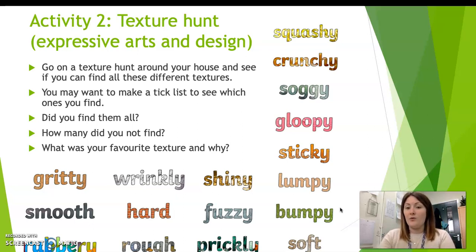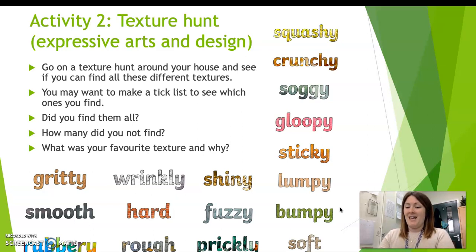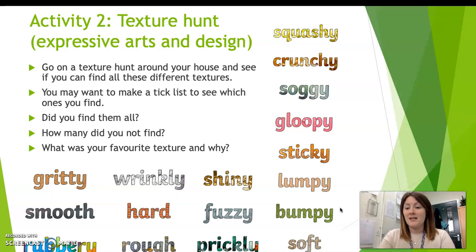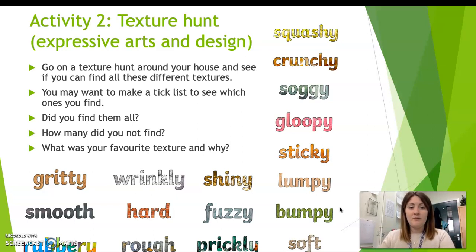If you don't know what they are, your grown-up can help you. You can make a tick list if you want to, to see which ones you manage to find and which ones you don't. If you can't find any of these things, can you think of anything that might feel like that? So if you can't find anything that is sticky, can you think of anything that might feel sticky? Did you manage to find them all? How many did you not find? What was your favourite texture and why? It might be that soft is your favourite because that's what your favourite cuddly toy feels like, or sticky is your favourite because that's your favourite food. So choose your favourite and why for activity number two.